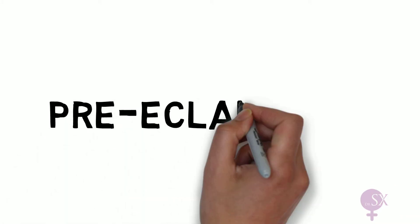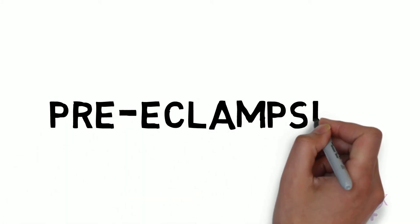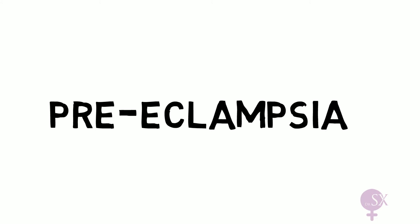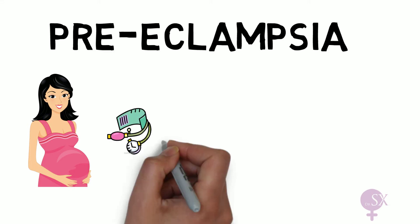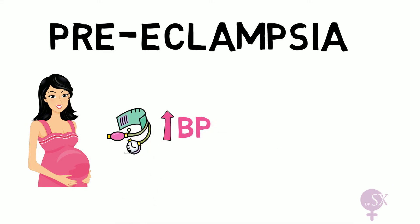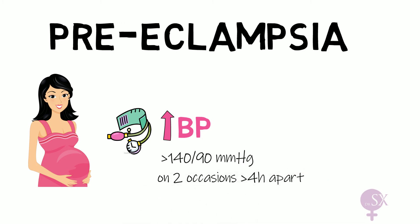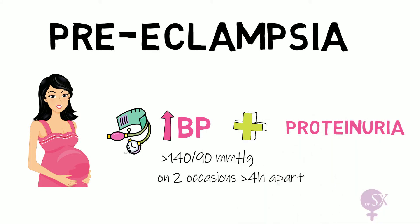Hi, I'm Sarah Schwerep and this video is going to be about preeclampsia. Preeclampsia refers to a disorder of pregnancy associated with high blood pressure — that is a blood pressure above 140/90 mmHg taken on two occasions at least four hours apart — and protein present in the urine. This is a multi-system disorder affecting multiple organs of the body.